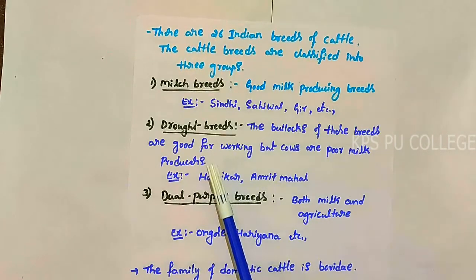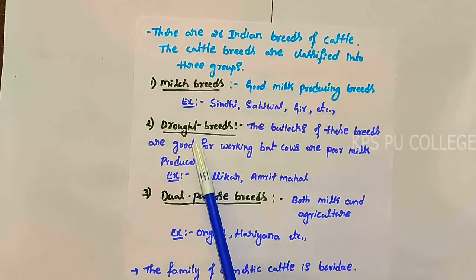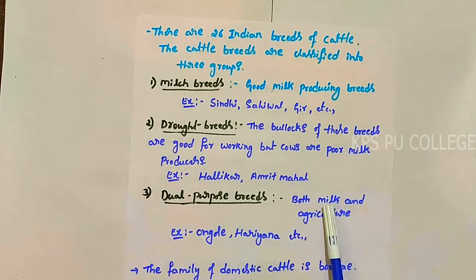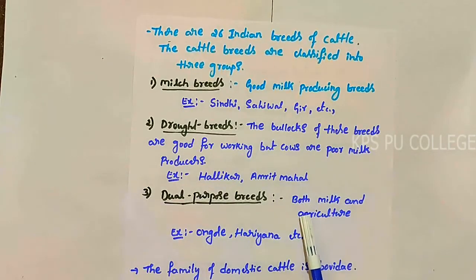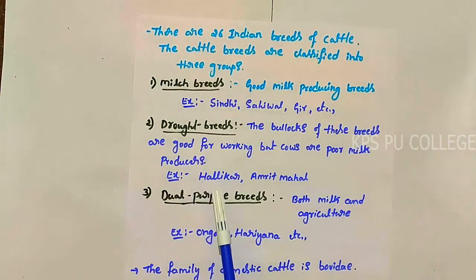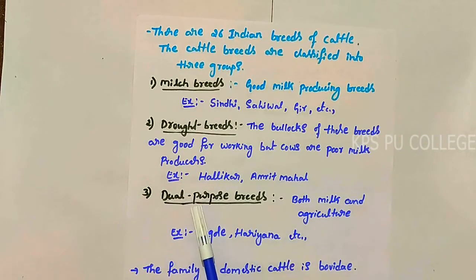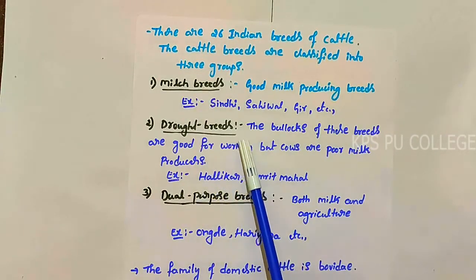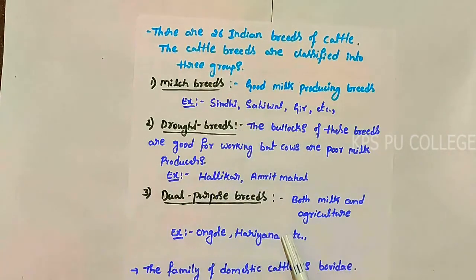Dual purpose breeds are used for both milk and agricultural purposes. Examples of draught breeds are Hallikar and Amrit Mahal. Examples of dual purpose breeds are Angol and Haryana. These are the three groups of cattle classified on the basis of working and milk-producing capacity.